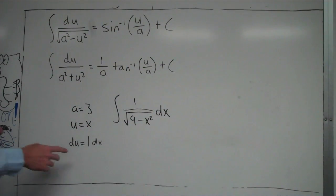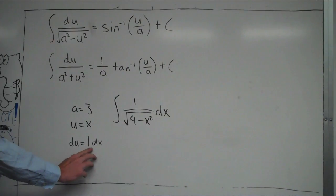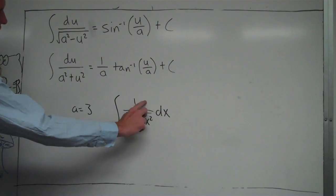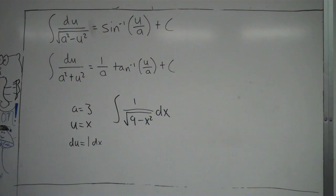So again, the du, which is 1, is right on top. I have dx there, but I can just move the dx up on top of that 1. We're set up perfectly, and therefore,